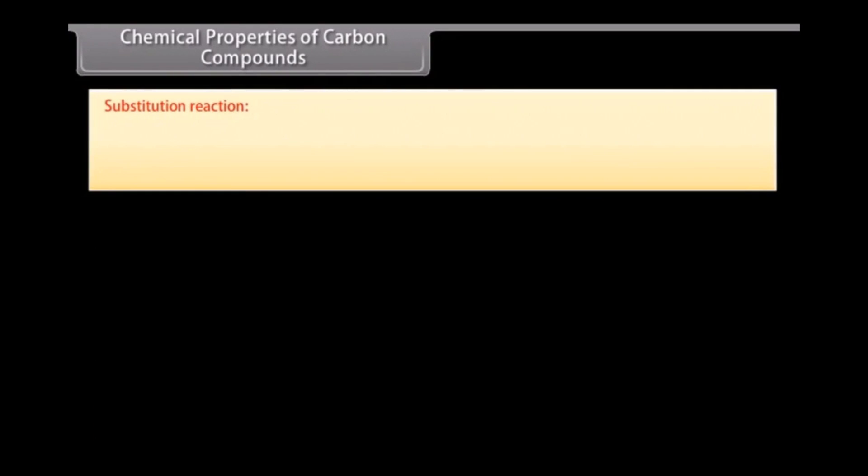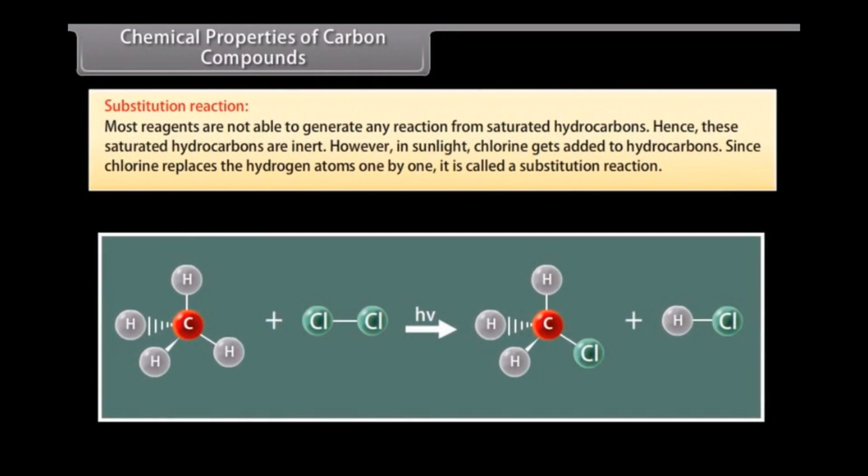Substitution reaction. Most reagents are not able to generate any reaction from saturated hydrocarbons. Hence, these saturated hydrocarbons are inert. However, in sunlight, chlorine gets added to hydrocarbons. Since chlorine replaces the hydrogen atoms one by one, it is called a substitution reaction.